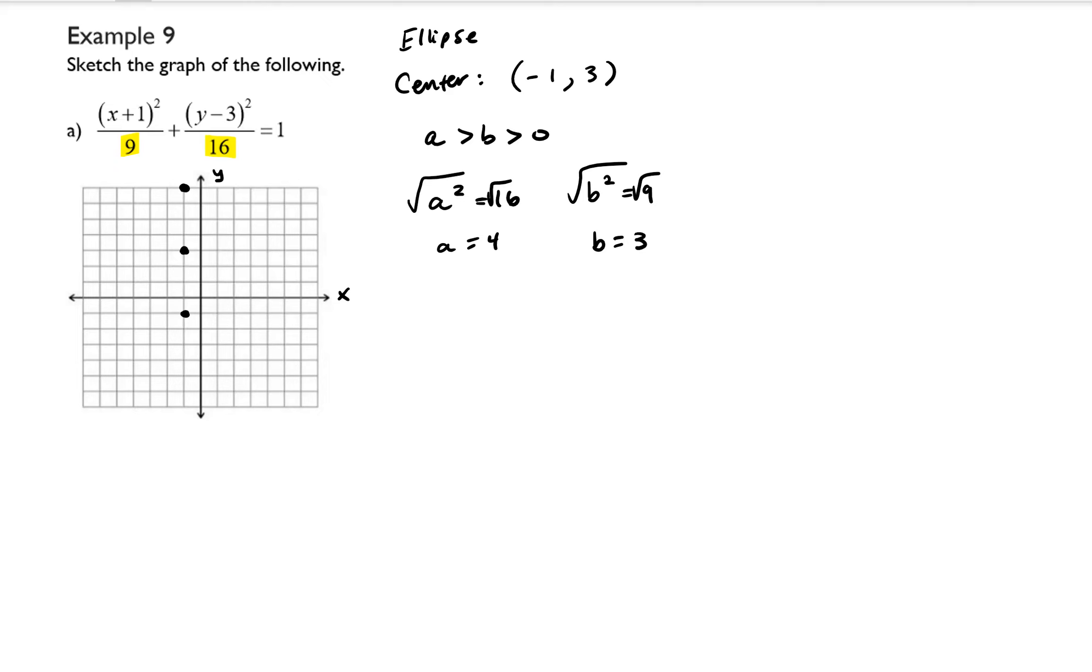And then I also want to plot my co-vertices and we get those by starting at the center and then moving left and right our b value. So 1, 2, 3, there's a co-vertex right there. And then if we move left 1, 2, 3, there is a co-vertex right there. And by connecting these ordered pairs, that will give us the ellipse that we are looking for.